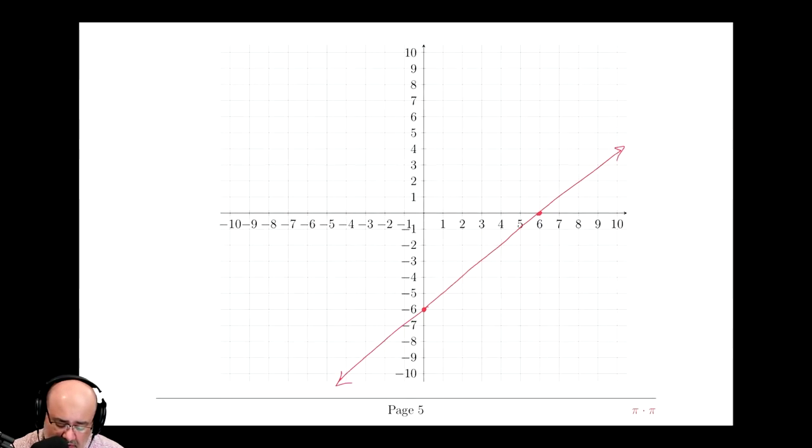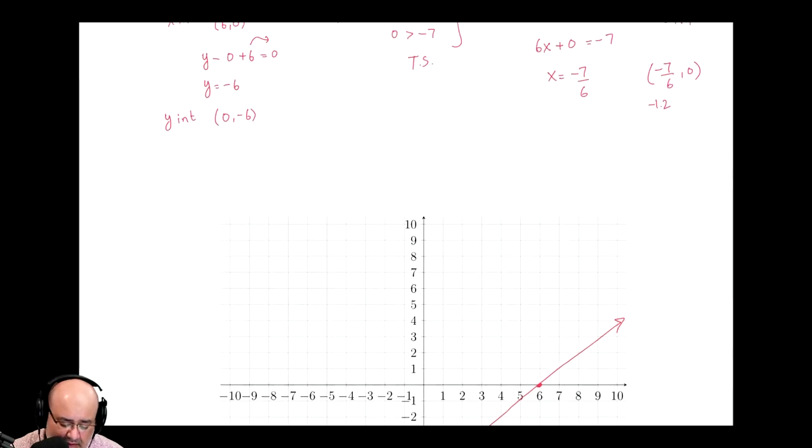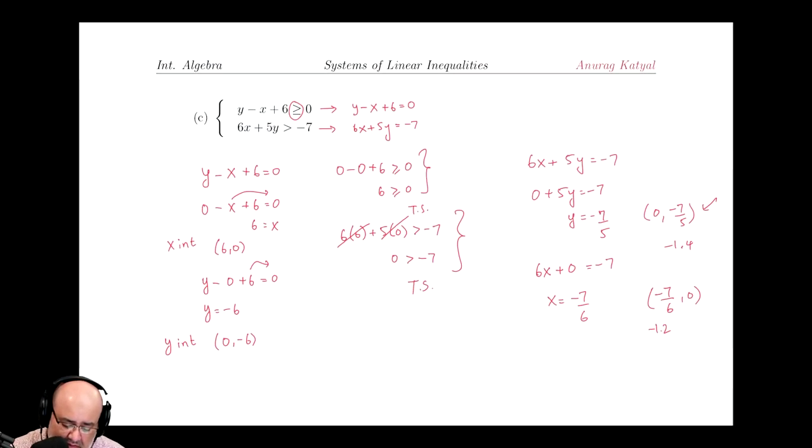And then 0, 0 is my usual test point as long as it's not on the line. I did that test right here. So 0 minus 0 plus 6 is greater than or equal to 0, which gives us 6 is greater than or equal to 0, which means that's a true statement.